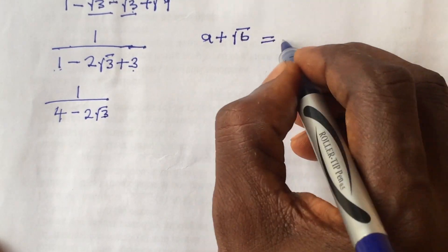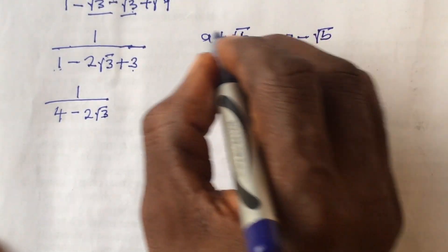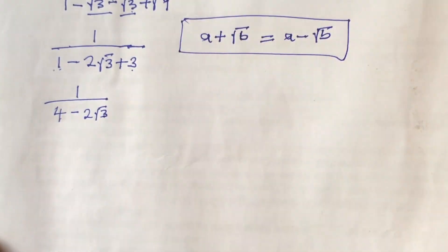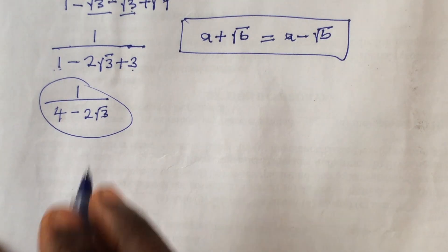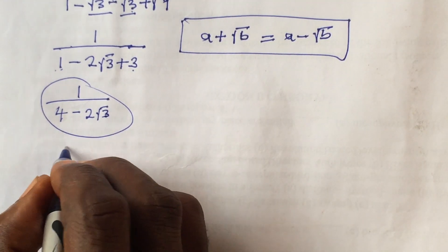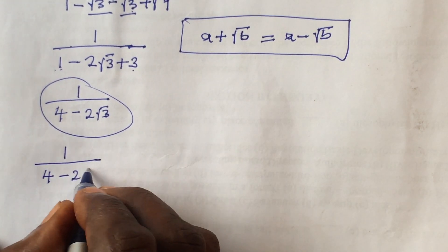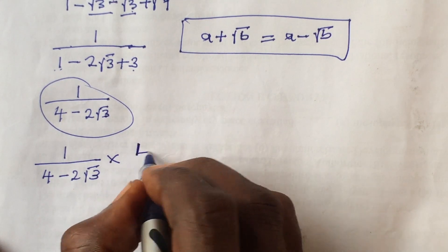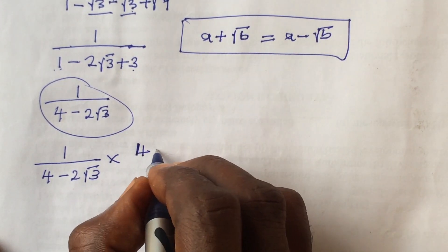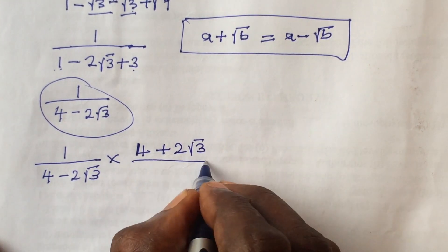So according to this rule in surds, this expression can be written as 1 over (4 minus 2 root 3) times (4 plus 2 root 3) over (4 plus 2 root 3).